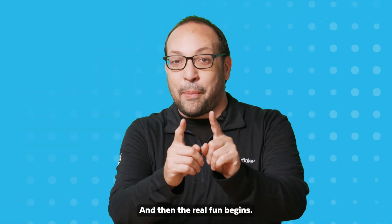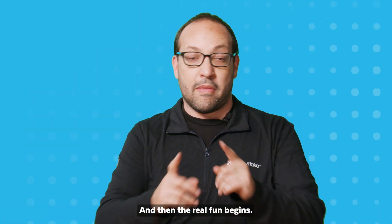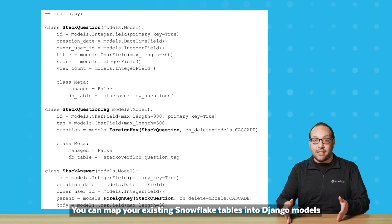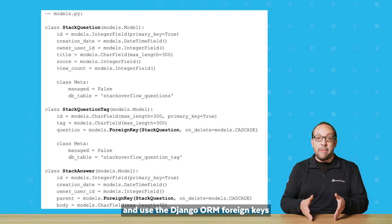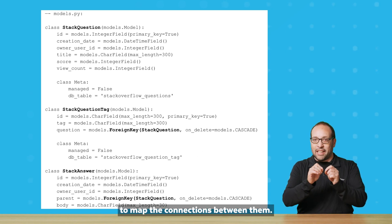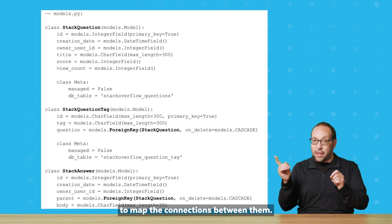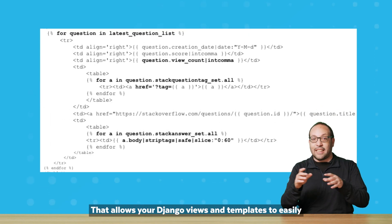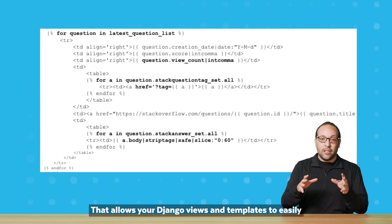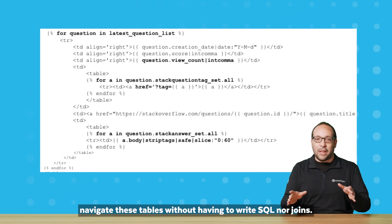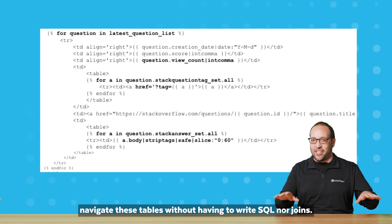And then the real fun begins. You can map your existing Snowflake tables into Django models, and use the Django ORM foreign keys to map the connections between them. That allows your Django views and templates to easily navigate these tables without having to write SQL nor joins.